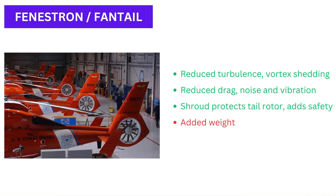The fenestron offers safety advantages too since the shroud helps protect the rotor from striking outside objects. Tail rotor strikes against trees, power lines, and other obstructions are one of the most common causes of helicopter crashes, so reducing the rotor's vulnerability to damage is important. The shroud also reduces the danger tail rotors have traditionally posed to ground crew operating near helicopters during takeoff and landing.